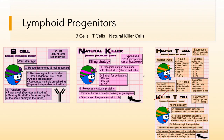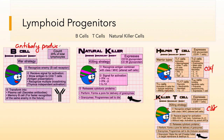Lymphoid progenitors include B cells, natural killer cells, and T cells. T cells come in two basic types: CD4 T cells and CD8 T cells, though there are many other classes. B cells are antibody-producing cells found in the lymph nodes, and they are also phagocytic.